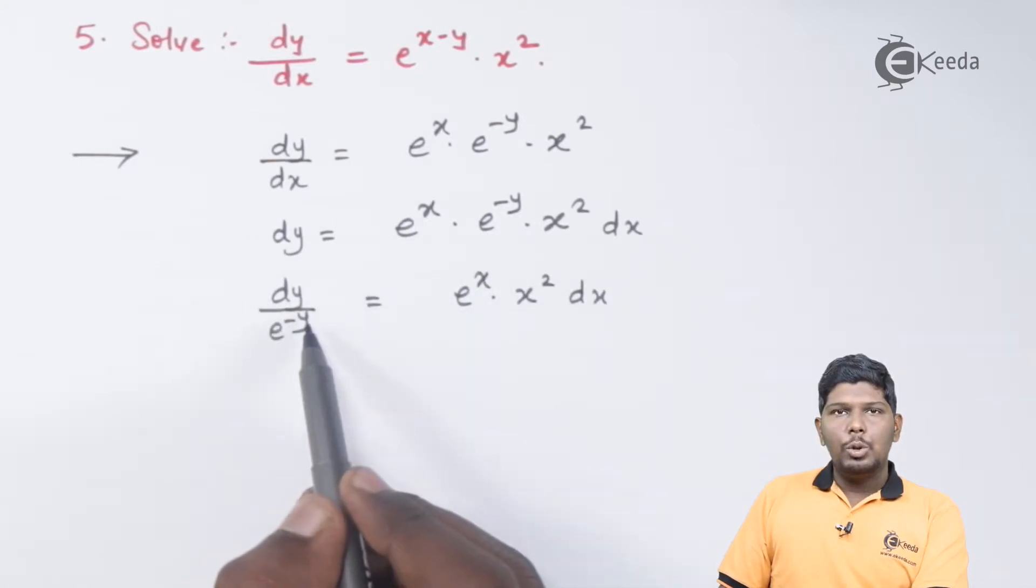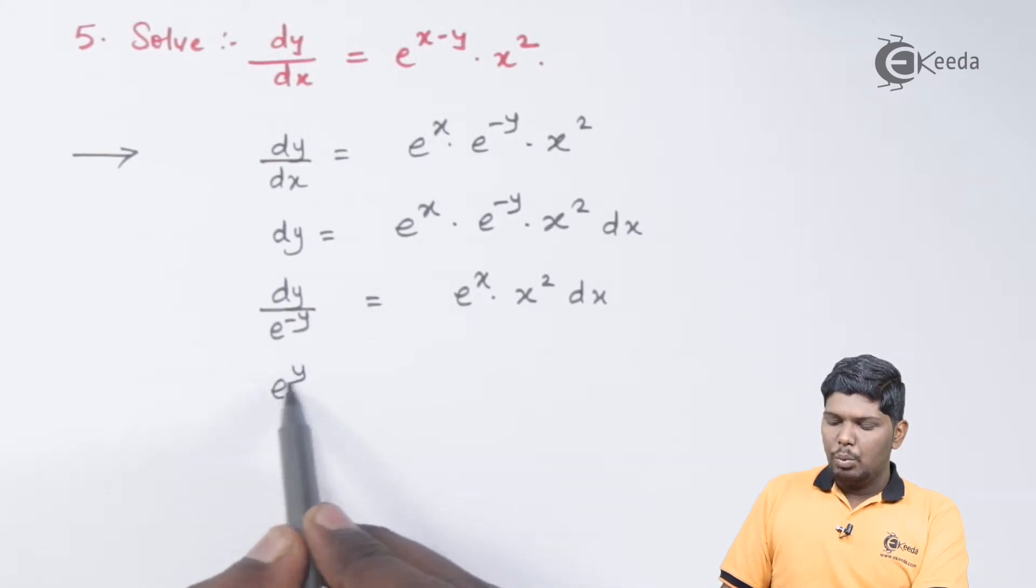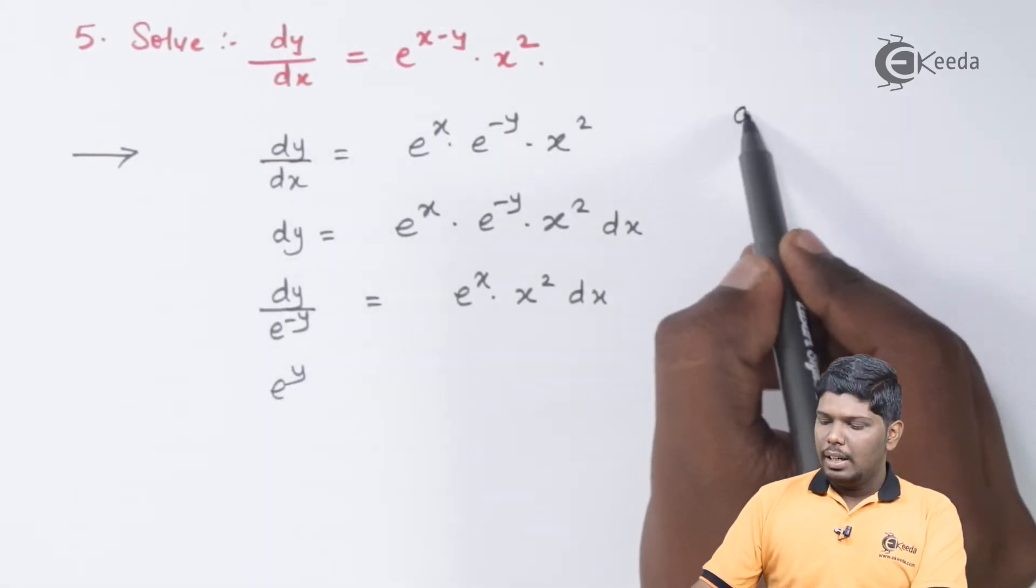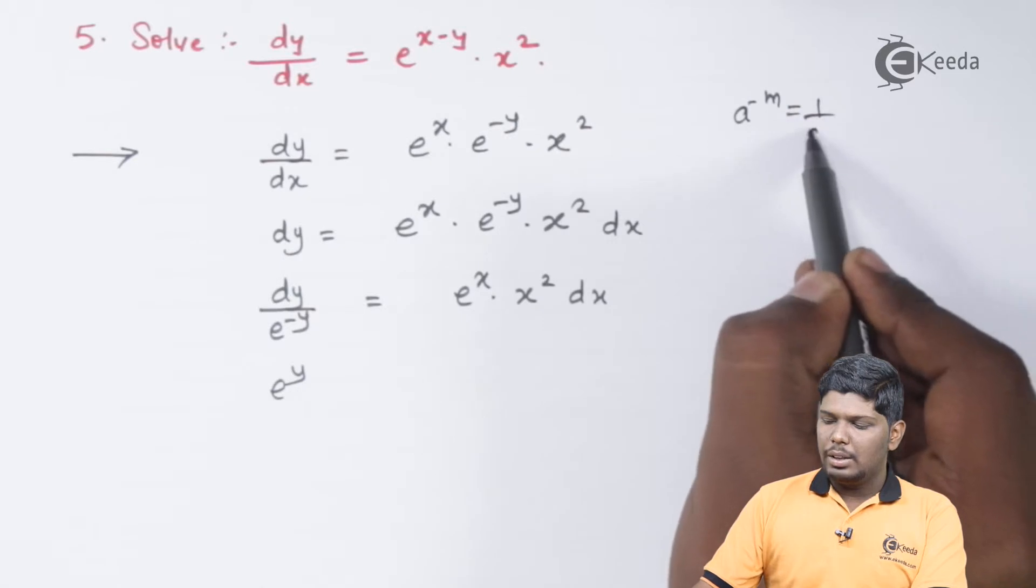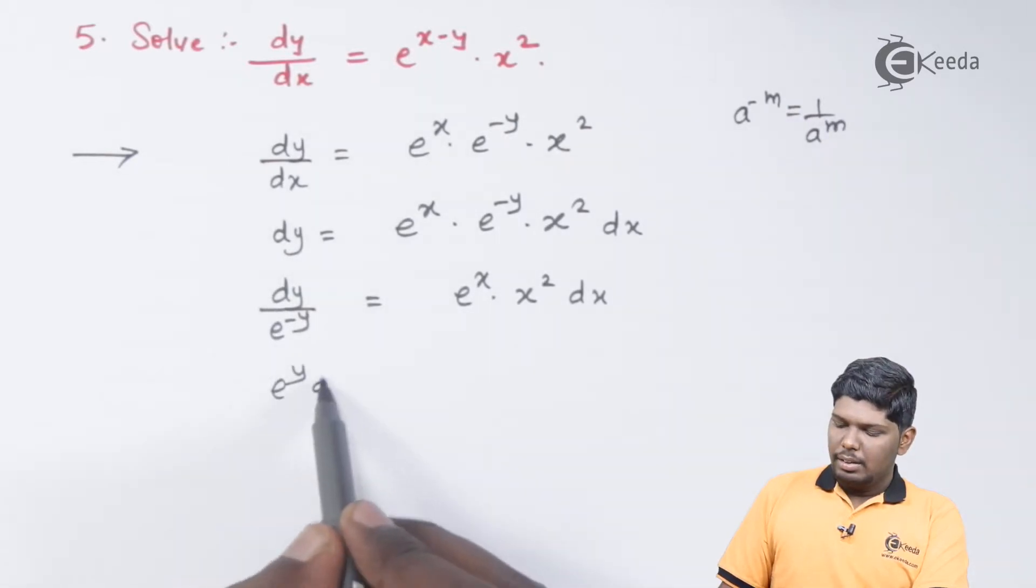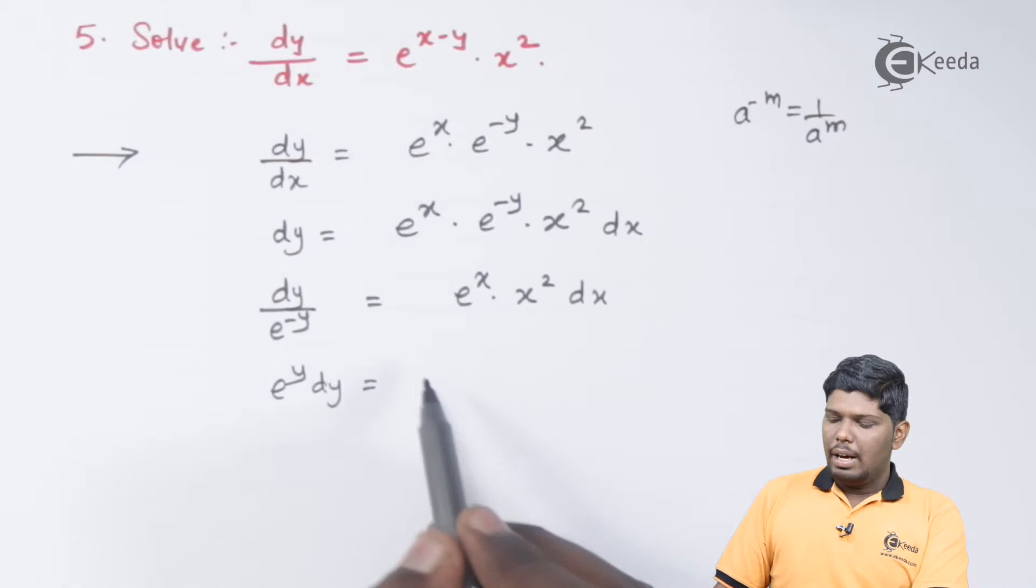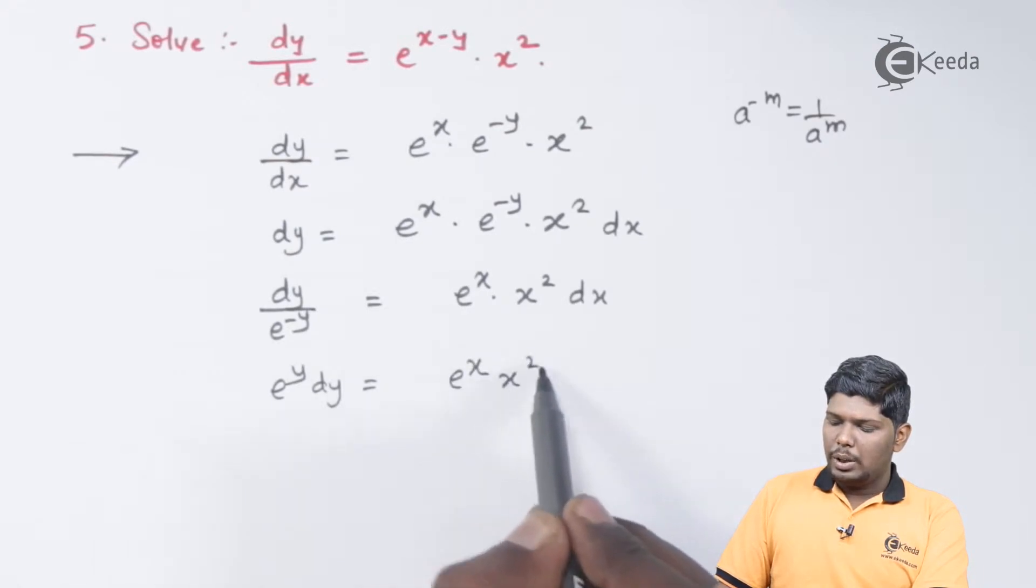Further, 1 upon e raised to minus y can be written as e raised to y. As the property says, a raised to minus n can be written as 1 upon a raised to m. Here, we have e raised to x into x squared dx.